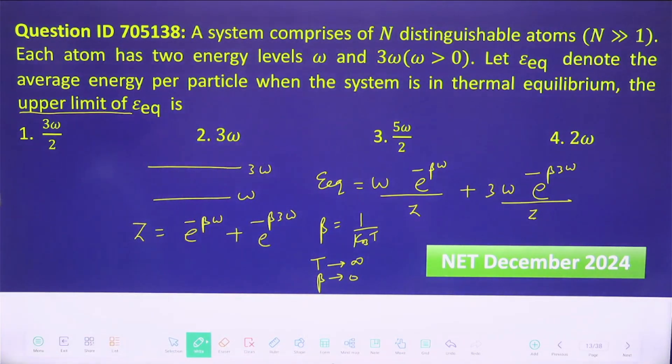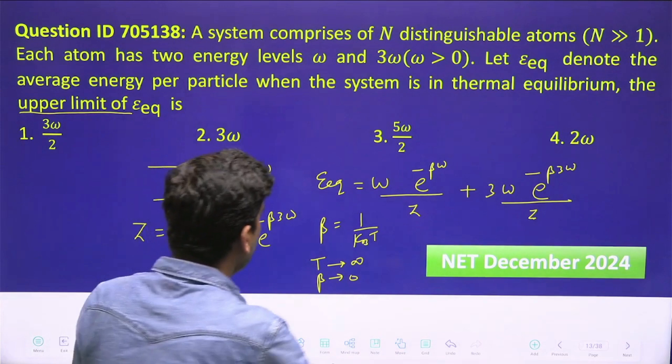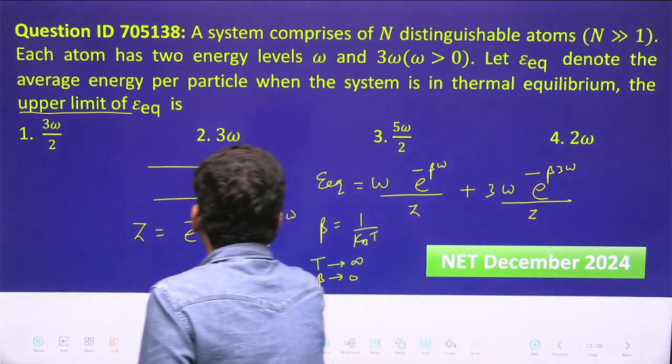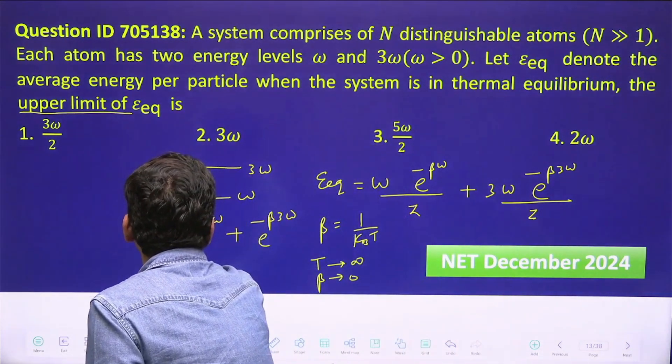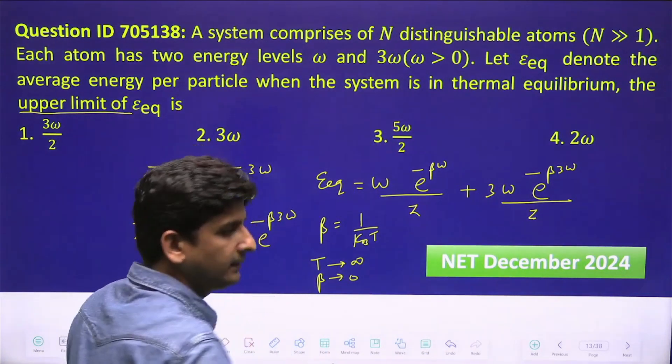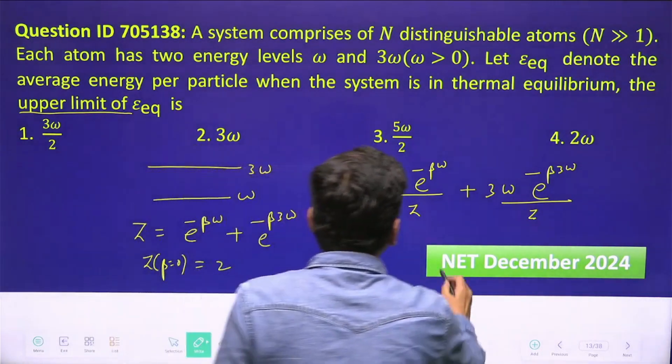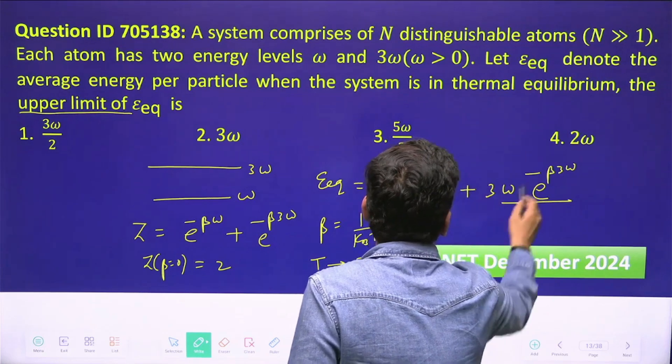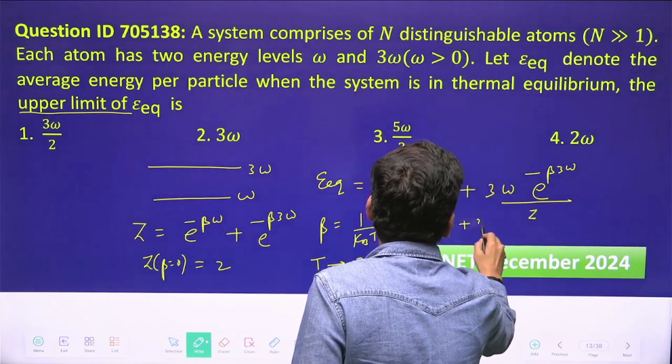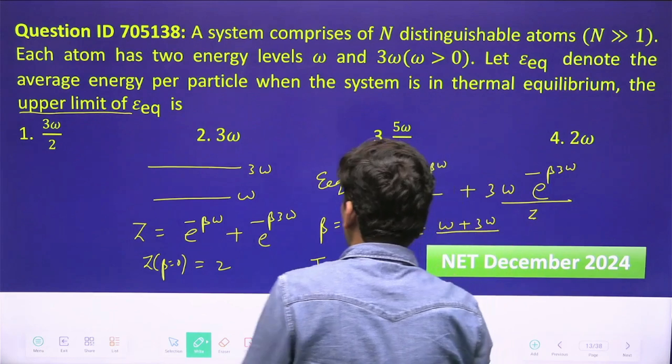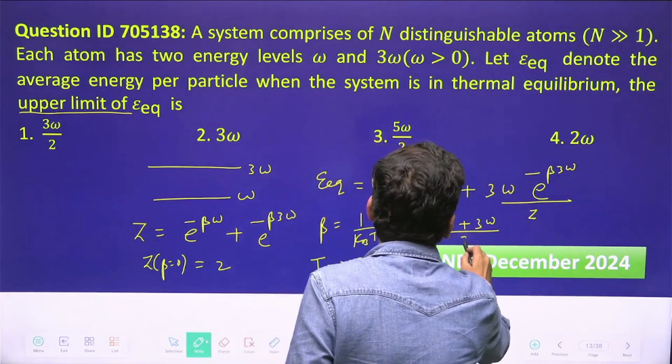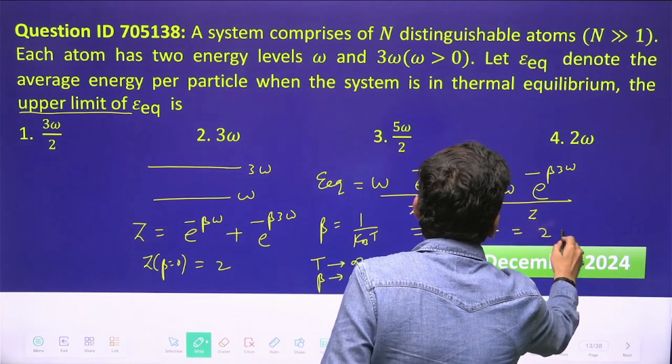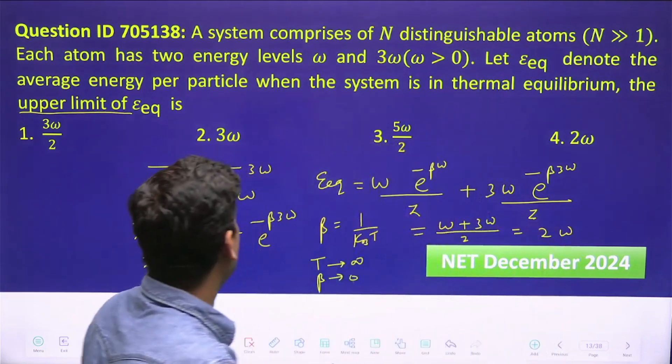If I put beta equals zero, Z at beta equals zero will become two (one plus one). This will become one, this will also become one. So omega plus three omega in the numerator, and in the denominator it will be two. So it is two omega. Two omega is the answer.